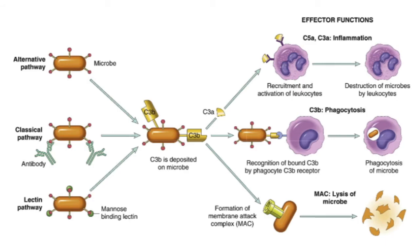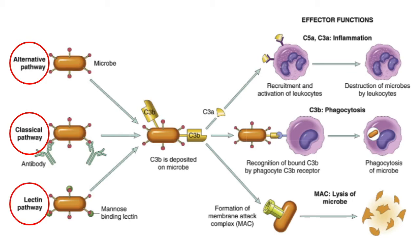The cleavage of C3 can occur by one of three pathways. The classical pathway is triggered by the fixation of C1 to an antibody like IgM or IgG that has combined with an antigen. The alternative pathway can be triggered by microbial surface molecules like endotoxin or lipopolysaccharides, complex polysaccharides, cobra venom, or other substances — basically a pathway that doesn't require antibody-antigen binding for activation. The lectin pathway is where plasma mannose-binding lectin binds to carbohydrates on microbes and directly activates C1, recognizing specific carbohydrate patterns found only on the surfaces of pathogens like bacteria, viruses, or fungi. All three pathways can lead to the formation of an active enzyme that splits C3 into two functionally distinct fragments, C3A and C3B.